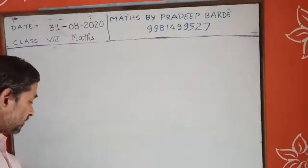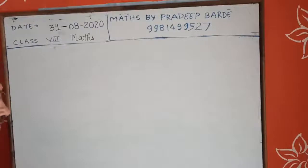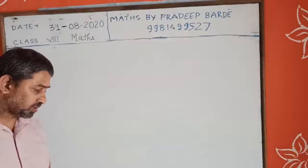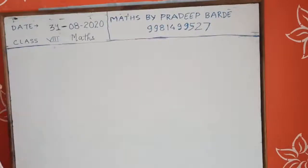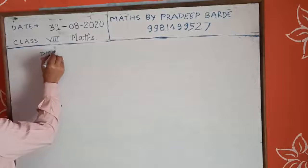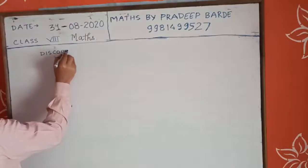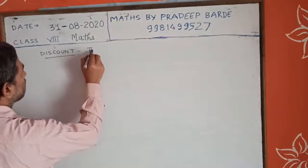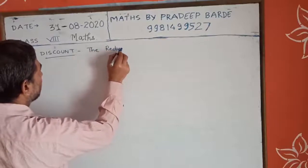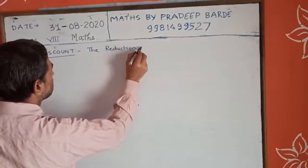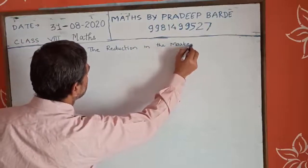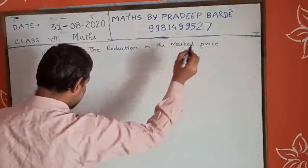Good afternoon dear students. In the last class we did some questions based on profit and loss. Today let's discuss questions based on discount. First, let's see what is the meaning of discount — it is actually the reduction in the marked price. The reduction in the marked price is called discount.